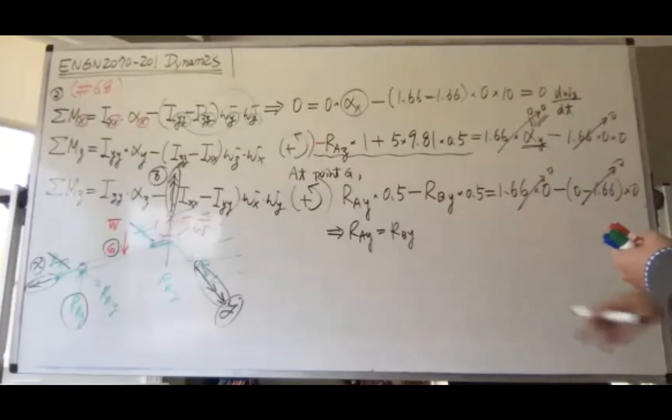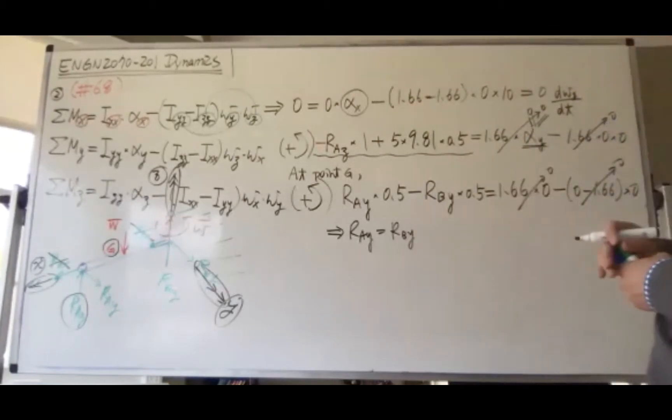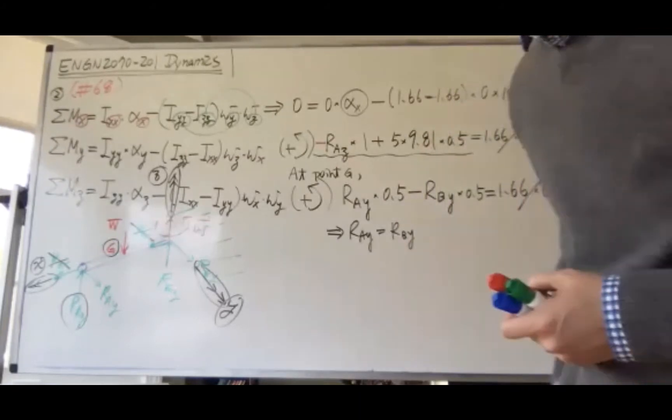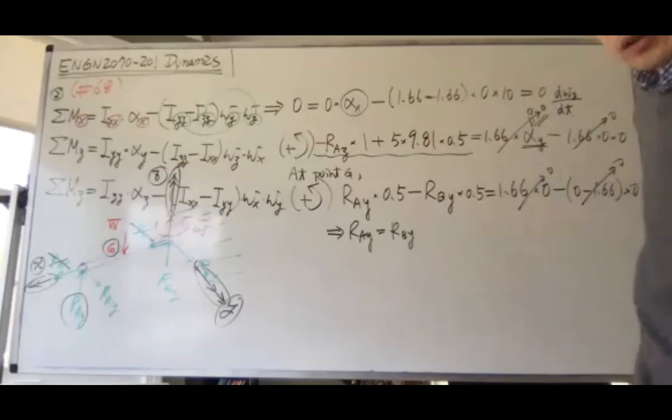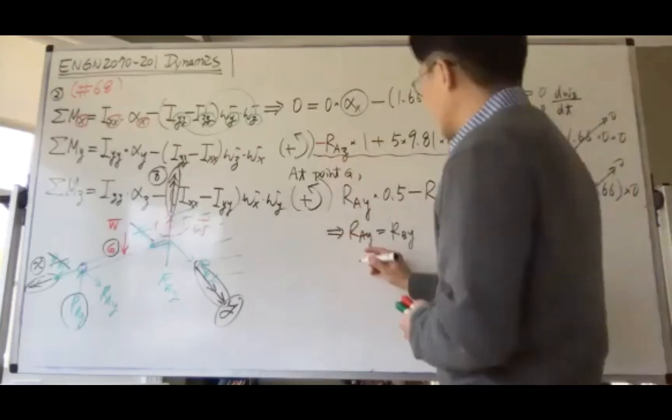Let's repeat the equilibrium in the x-direction. In the x-direction, everything is zero. What about point B?